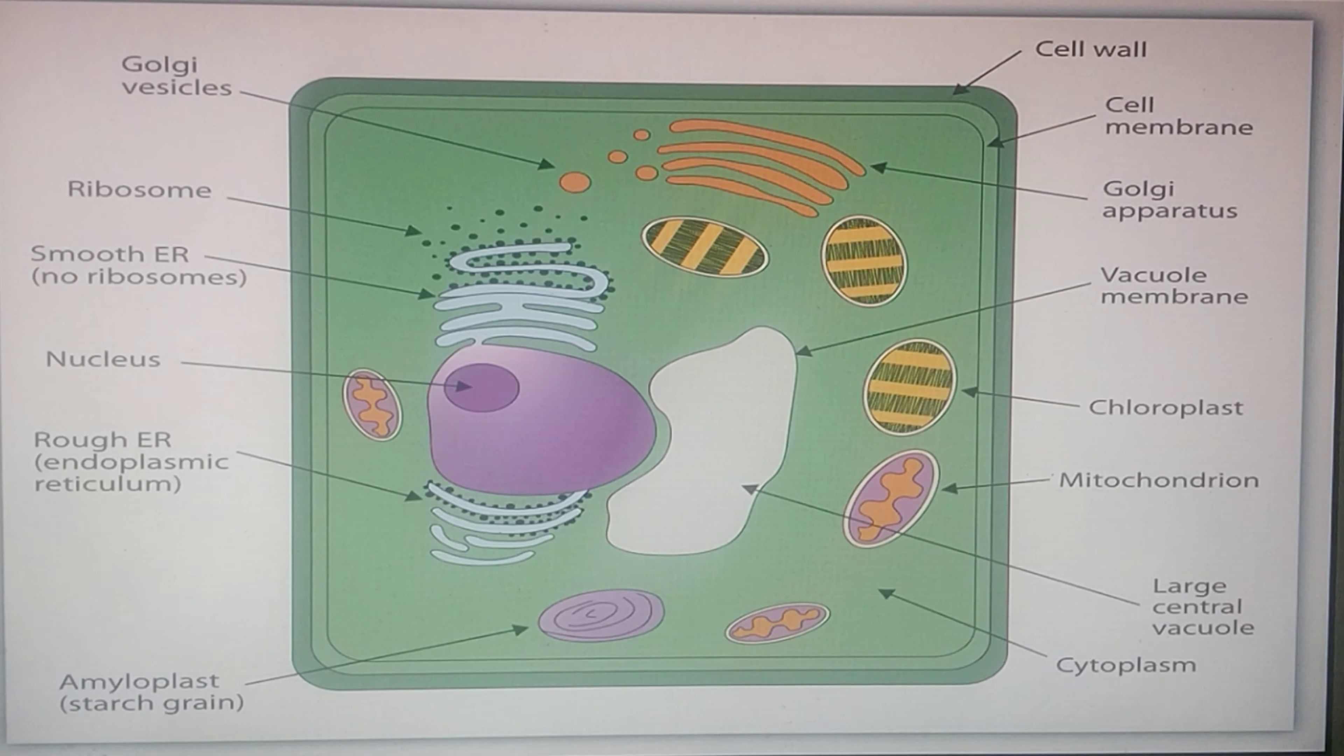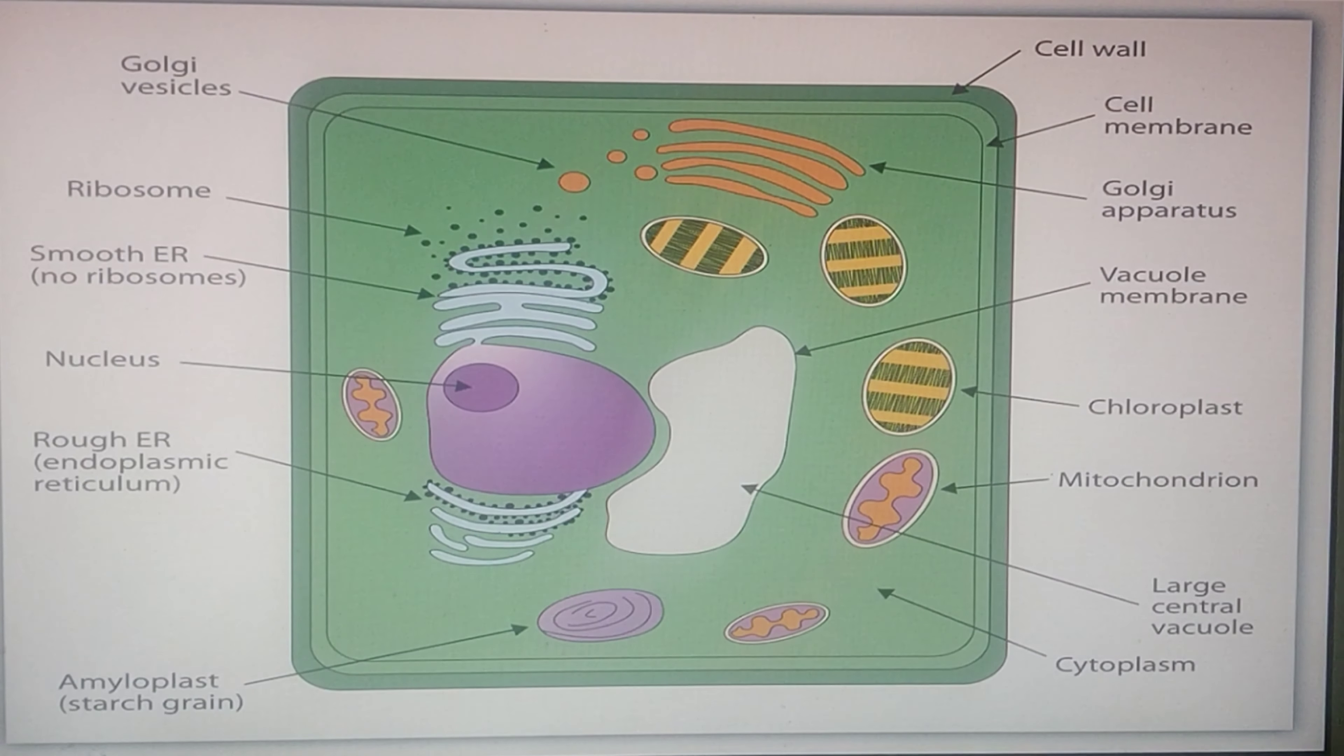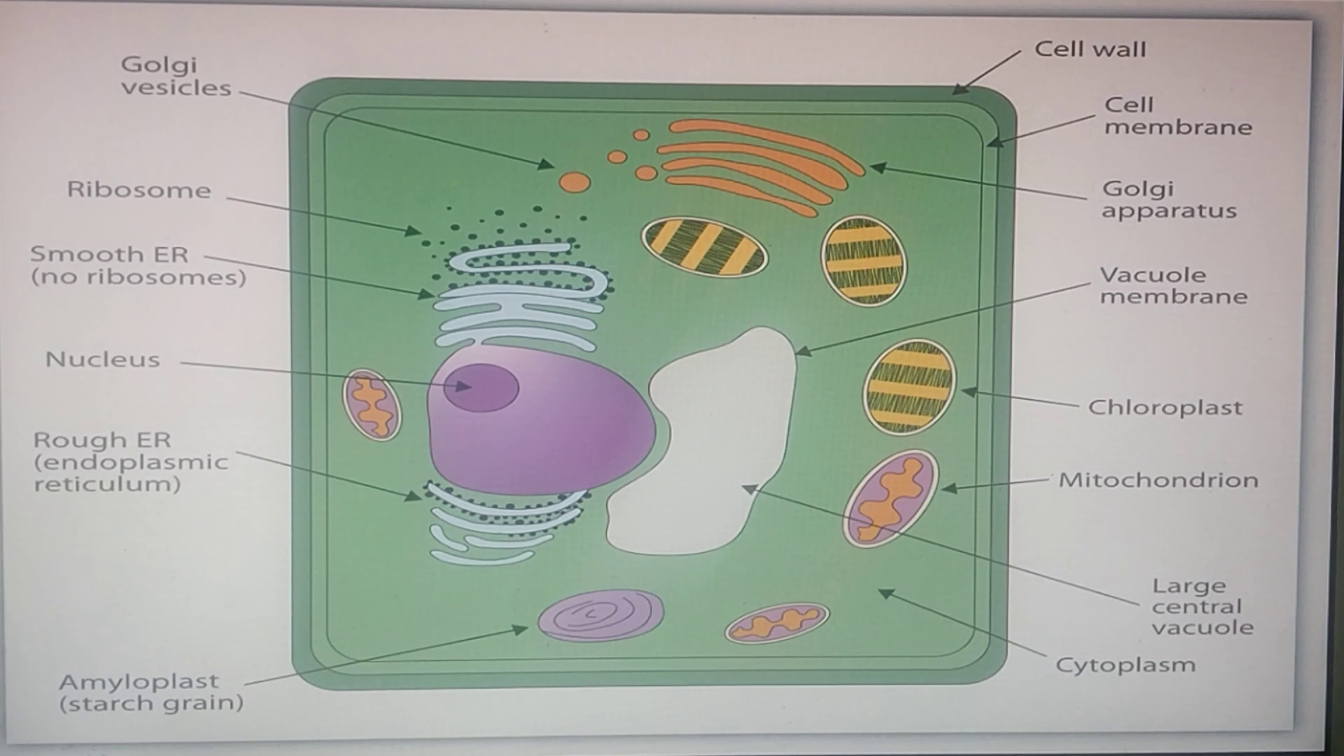Plant cells have cell walls composed of cellulose and some other compounds. And there are special cell to cell communication pathways known as Plasmodesmata.